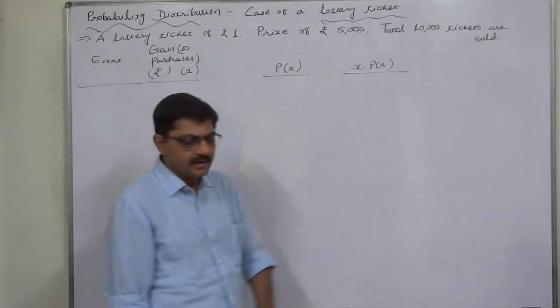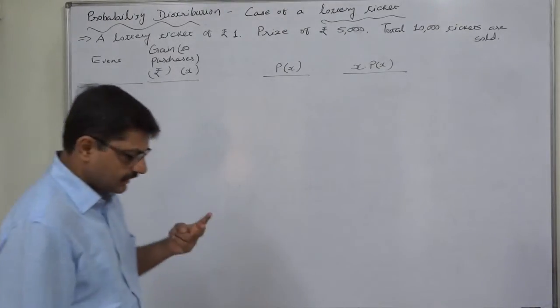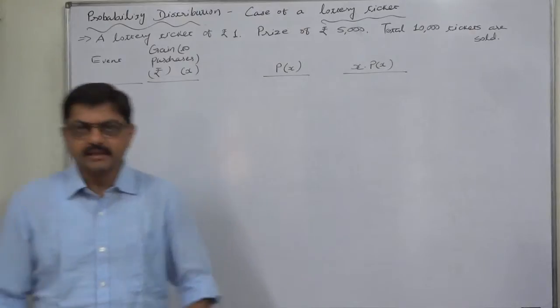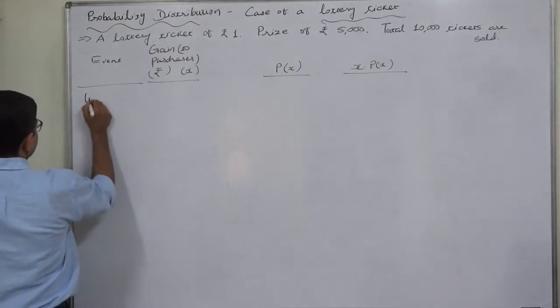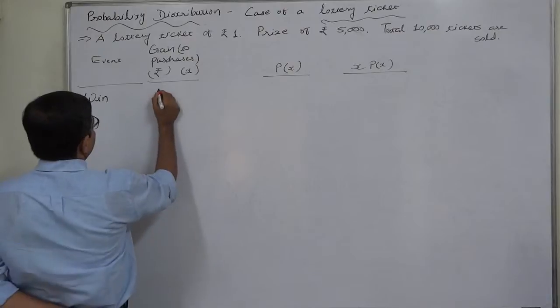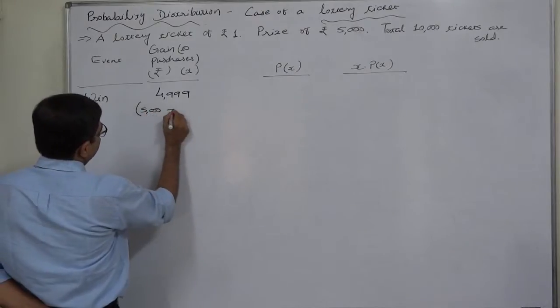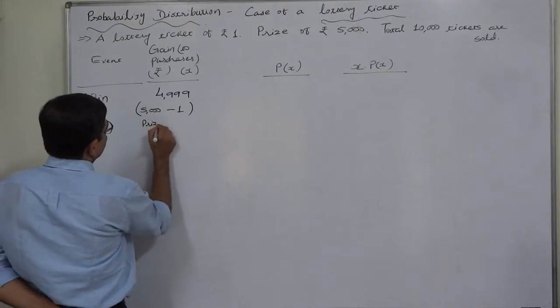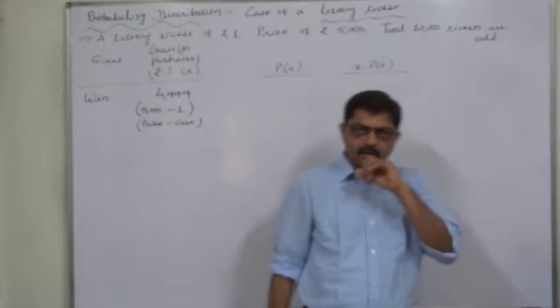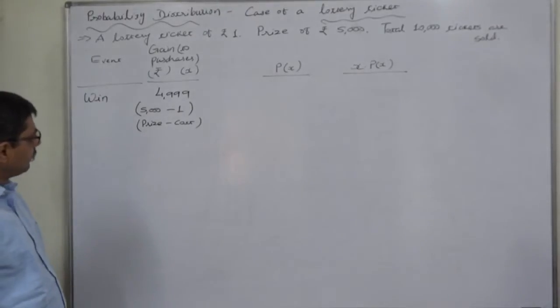That means on remaining 9,999, nothing will be given. Now, from the purchaser's point of view, the purchaser has two mutually exclusive possibilities. One is winning and another is no winning. So if the purchaser wins, then what will happen? 4,999 will be the gain, because 5,000 is prize money but one is cost of one ticket. So ultimately, after giving rupee 1, he will receive a prize money of rupees 5,000. So his net gain will be 4,999.